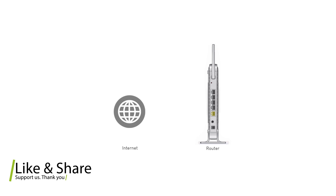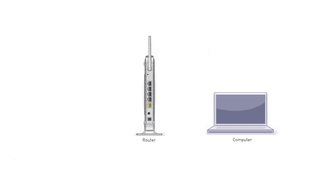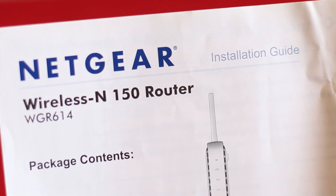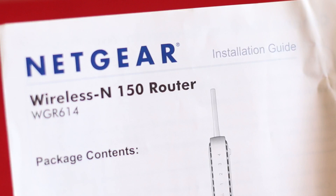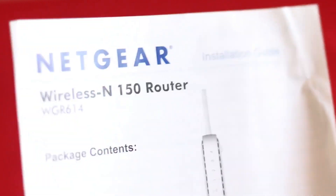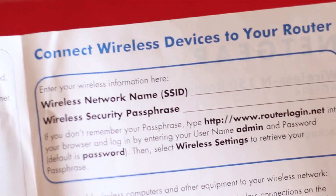If you don't have a modem between the ISP and the Netgear router, then follow these steps. Step 1: Connect your ISP LAN cable to the input internet port of the Netgear router. Step 2: Power on the Netgear wireless router. Step 3: Check the instruction booklet of the Netgear router, which contains the SSID name and the default Wi-Fi password.